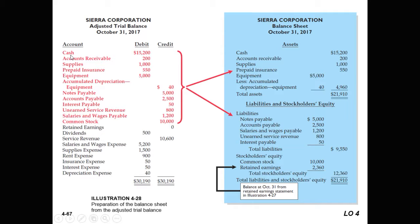We translate all the normal assets and liability account amounts over and pull common stock over from the adjusted trial balance. So as you can see, with an adjusted trial balance you create the entire set of financial statements. However, they have to be created in a definitive order: the income statement, the statement of retained earnings, and then the balance sheet.